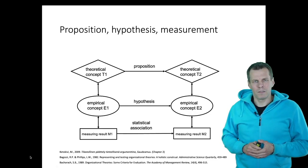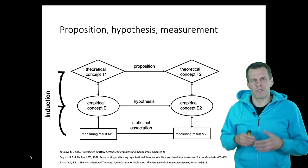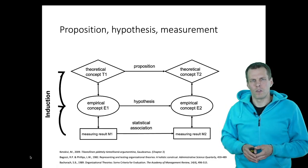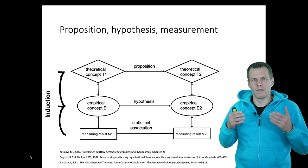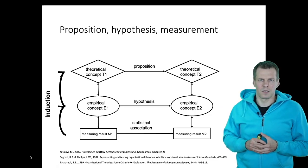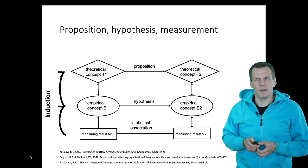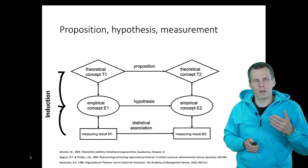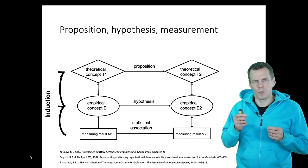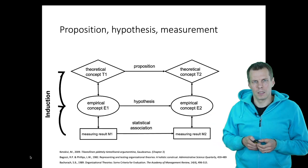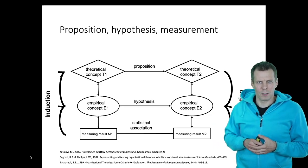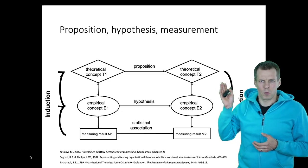If we proceed inductively, we go from data up to theory: we observe that strategic deviation and ROA are negatively correlated, then infer that differentiation doesn't pay off. In deductive research, we do the opposite: we start by deriving that if differentiation is related to performance, then strategic deviation should correlate with ROA — that's the hypothesis. We then produce a measurement result that tests the original proposition.